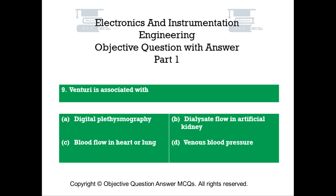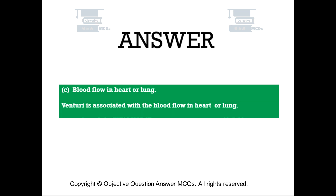Question number 9. Venturi is associated with: Option A: Digital Plethysmography. Option B: Dialysate flow in artificial kidney. Option C: Blood flow in heart or lung. Option D: Venous blood pressure. The right answer is Option C — Blood flow in heart or lung. Venturi is associated with the blood flow in heart or lung.